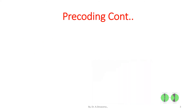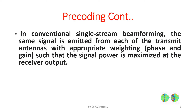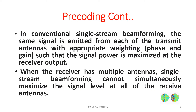In conventional single-stream beamforming, the same signal is emitted from each of the transmit antennas with appropriate weighting — a phase and gain — such that the signal power is maximized at the receiver output. When the receiver has multiple antennas, single-stream beamforming cannot simultaneously maximize the signal level at all of the receive antennas.